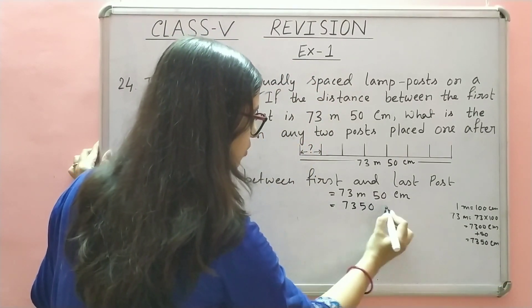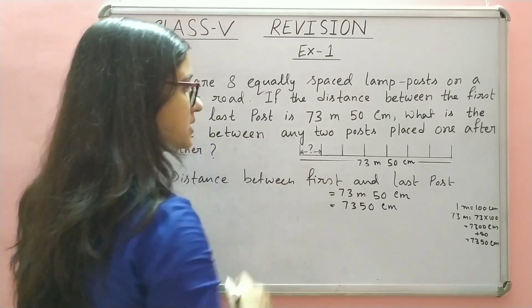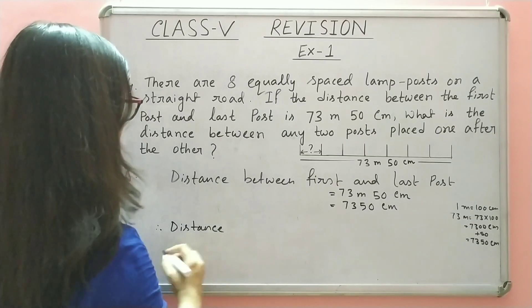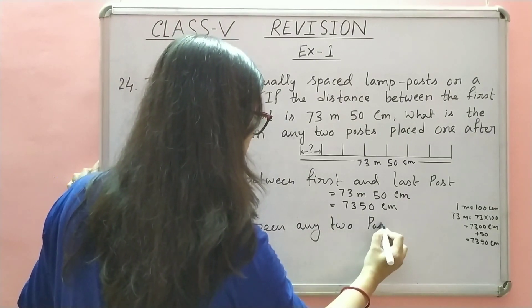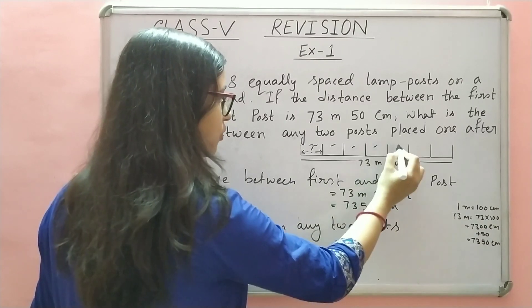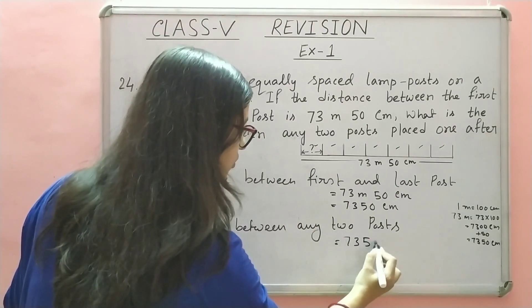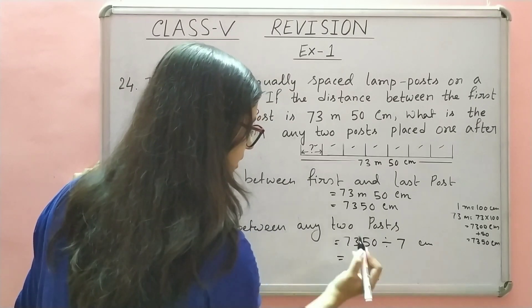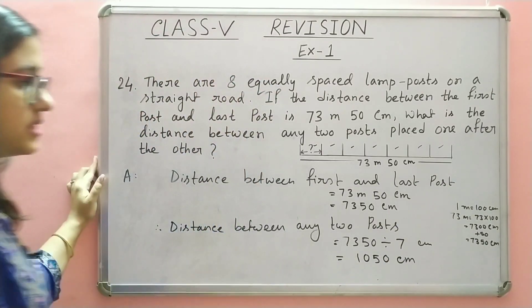73 meter 50 centimeter equals 7350 centimeter. Abhi dekho, what is the distance between two posts? Two posts ki beech ka jo distance hai, wo hume nikalna hai. Therefore, distance between any two posts: total distance 7350 centimeter. Aur yeh 1, 2, 3, 4, 5, 6, 7 — 7 parts hai. Toh hum divide kar lenge. 7350 divided by 7. 7 ones are 7, phir 0 aayega. 7, 5s are 35, phir 0. So, 1050 centimeter.